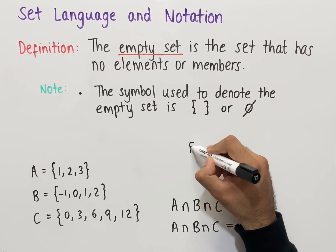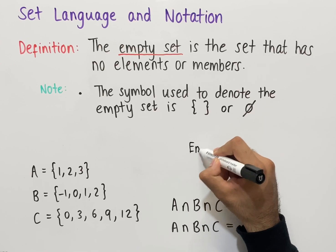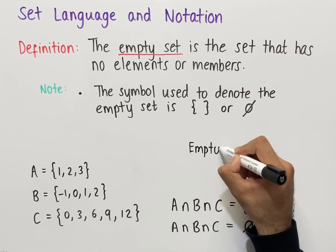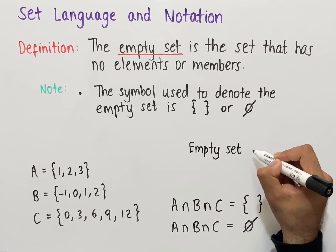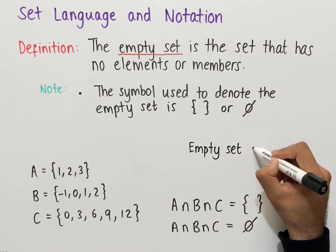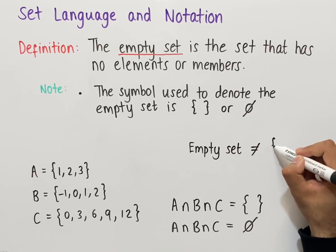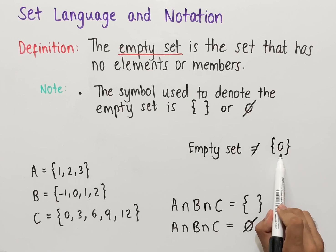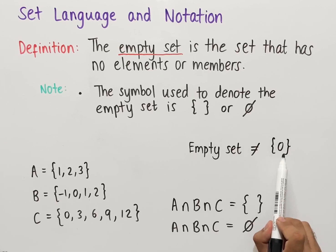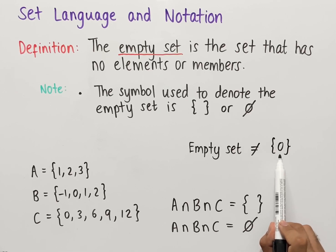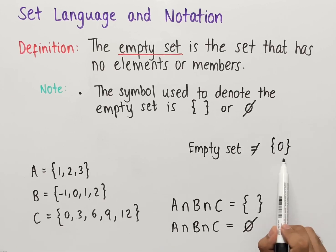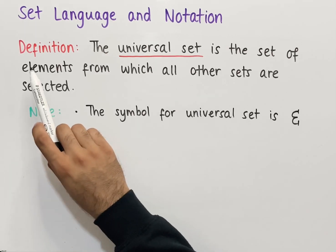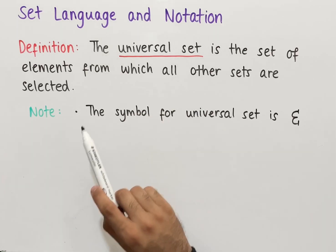A common misconception to note is that the empty set does not equal the set that has zero in it. The set containing zero still has an element inside — that element is zero. It is not empty; it doesn't have zero items, it has one item, which is zero.